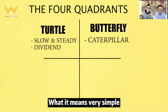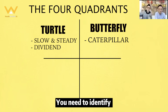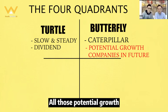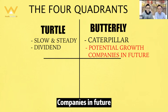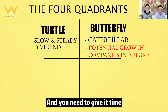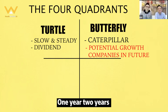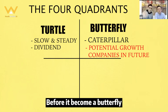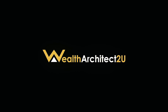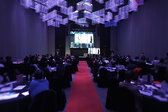What this means is simple — you need to identify all those potential growth companies of the future, all those caterpillars, and you need to give them time. We're talking about maybe one year, two years, before they become a butterfly.